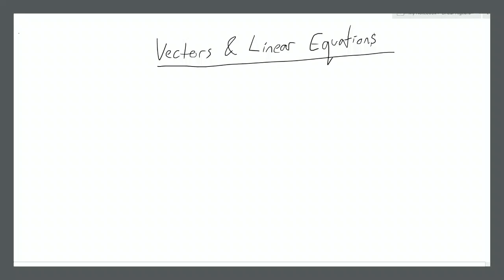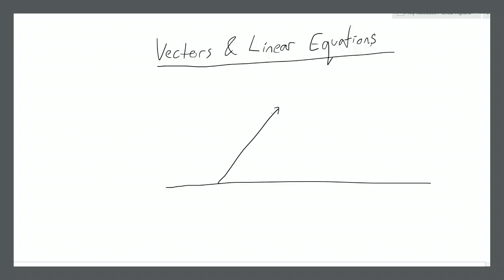In this video we are going to talk about how useful vector notation in the Cartesian coordinate system is and how that relates to linear equations. A vector in engineering and physics is described as a mathematical object with a magnitude and a direction. If we imagine a ball thrown into the sky at an angle of 60 degrees from the ground and a speed of 2 meters per second, this is a vector — its magnitude is 2 and its direction is 60 degrees from the horizontal.